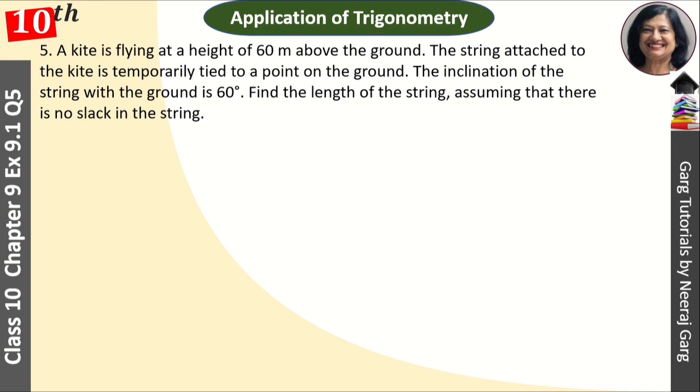A kite is 60 meters above the ground. We have made a diagram. This is A. This is our kite and the distance from the ground is 60 meters. And the string is AC, the string.